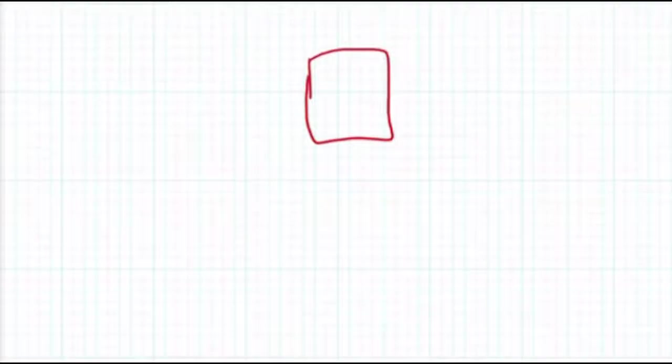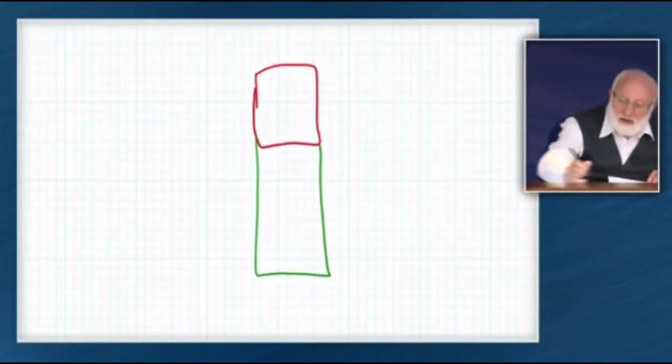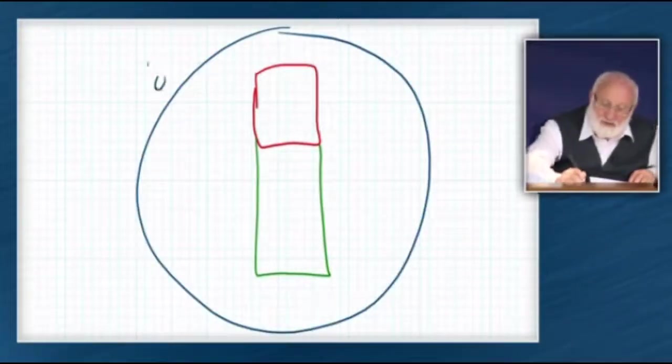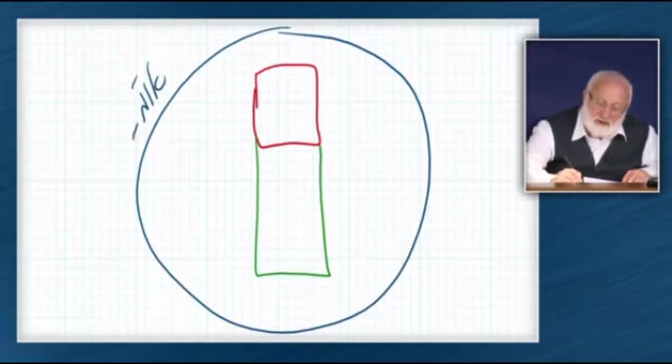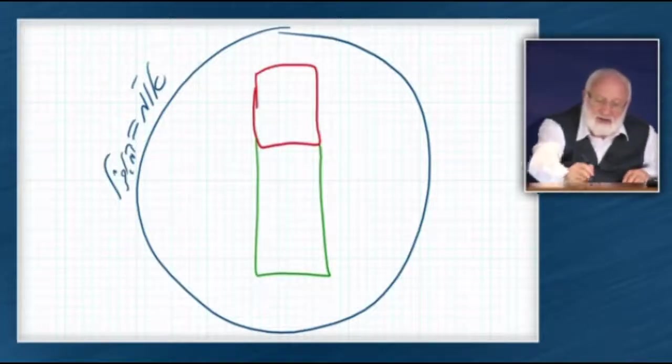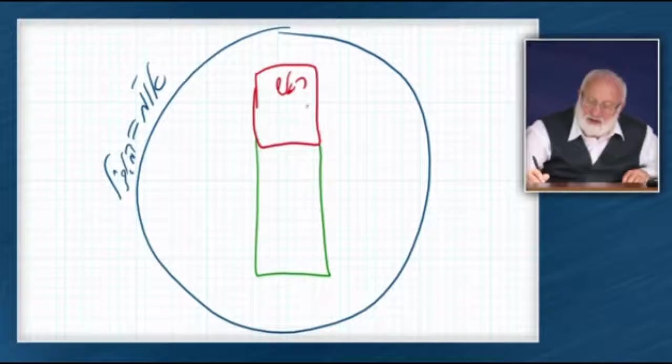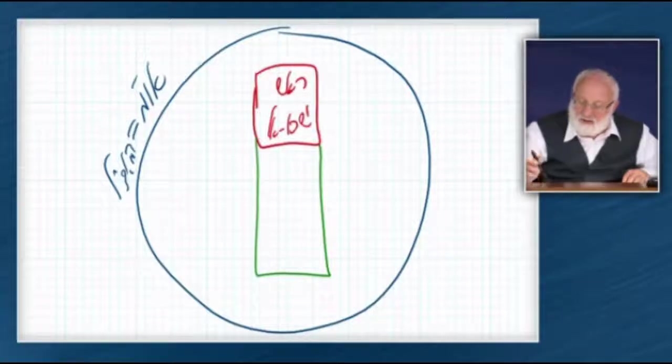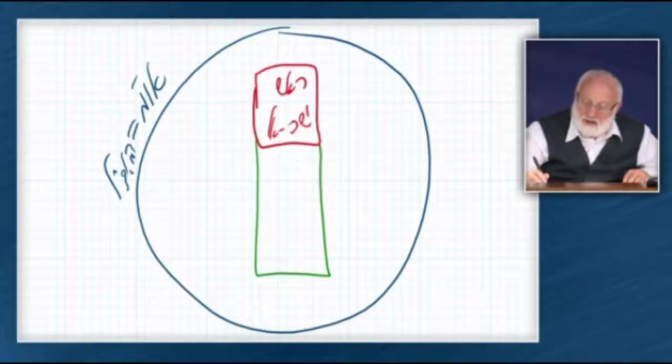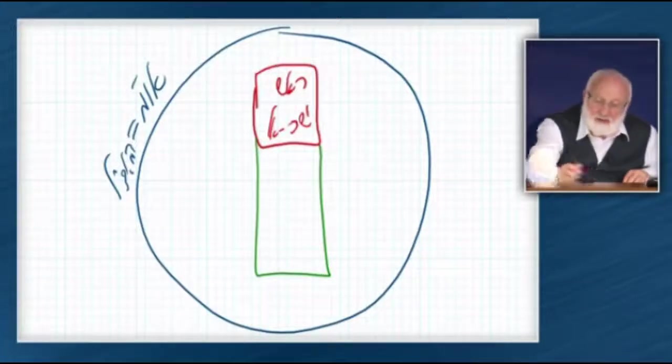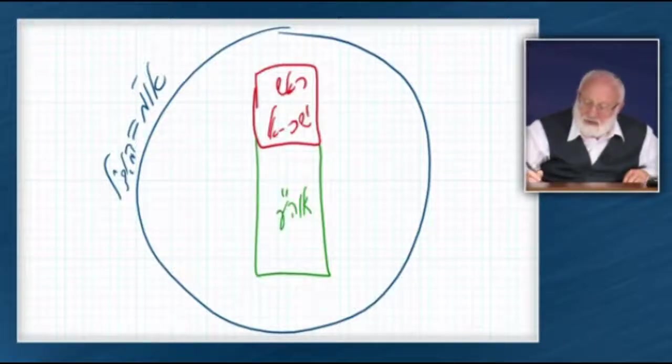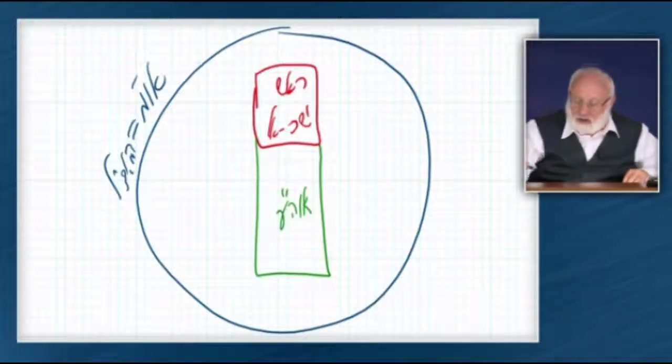It's a very simple structure. Very simple. You have Rosh, and you have Tosh Sof, right? And you have Or Mekif. The Maatzil, the emanator. This is the Rosh. Israel. And here is the nations of the world.